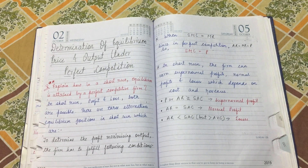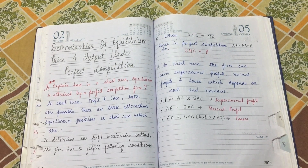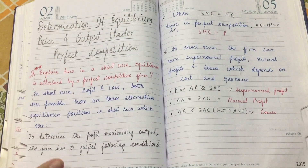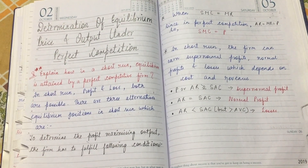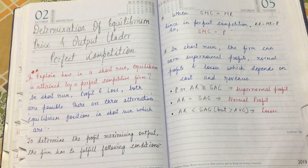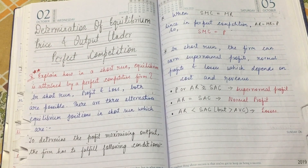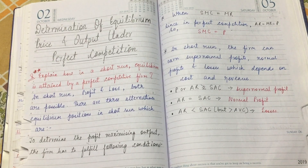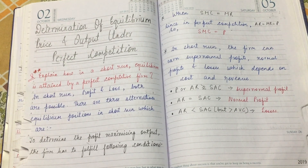We will discuss how the equilibrium of price and output is determined for a perfectly competitive firm. This is a very important question, so don't skip. In perfect competition, prices are the same, there are large numbers of sellers and buyers, selling homogeneous and identical products.